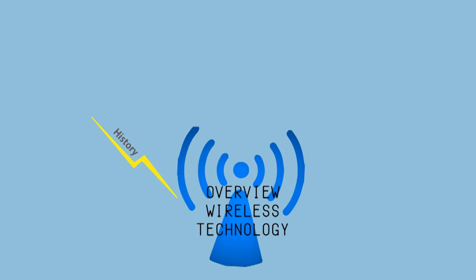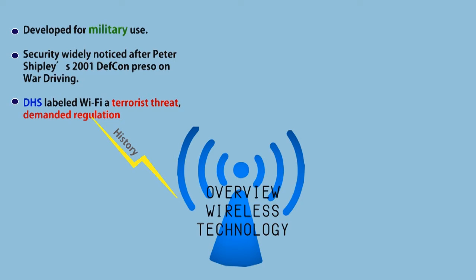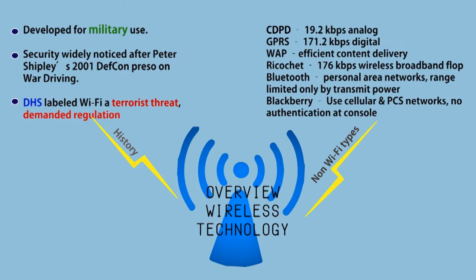Wireless was developed for military use. DHS labeled Wi-Fi a terrorist threat and demanded regulation. WAP is efficient content delivery.